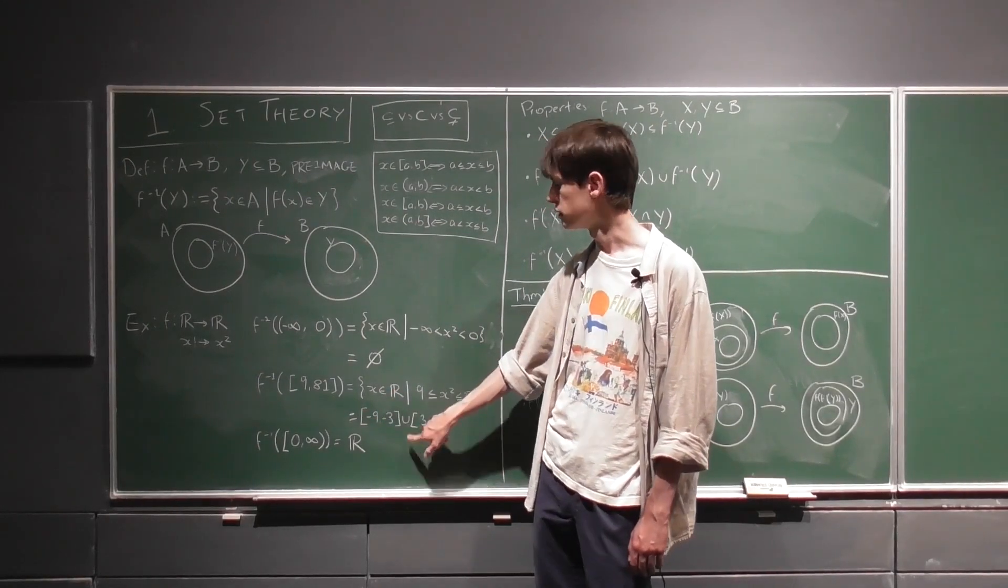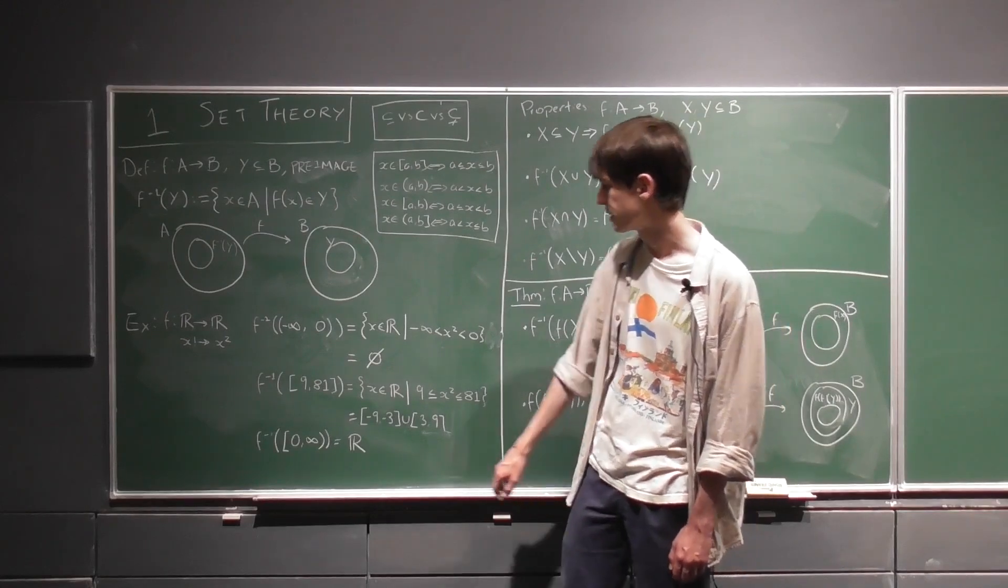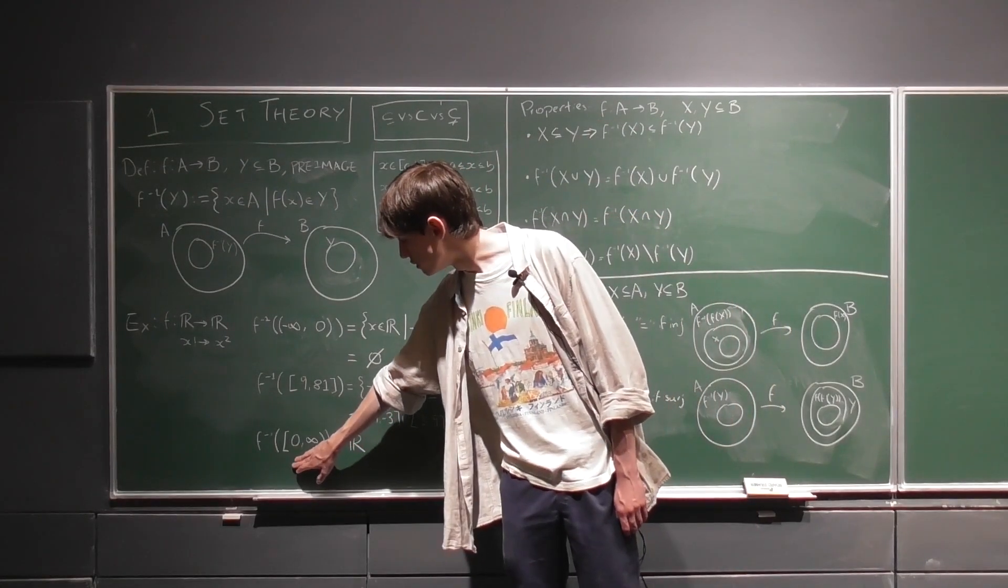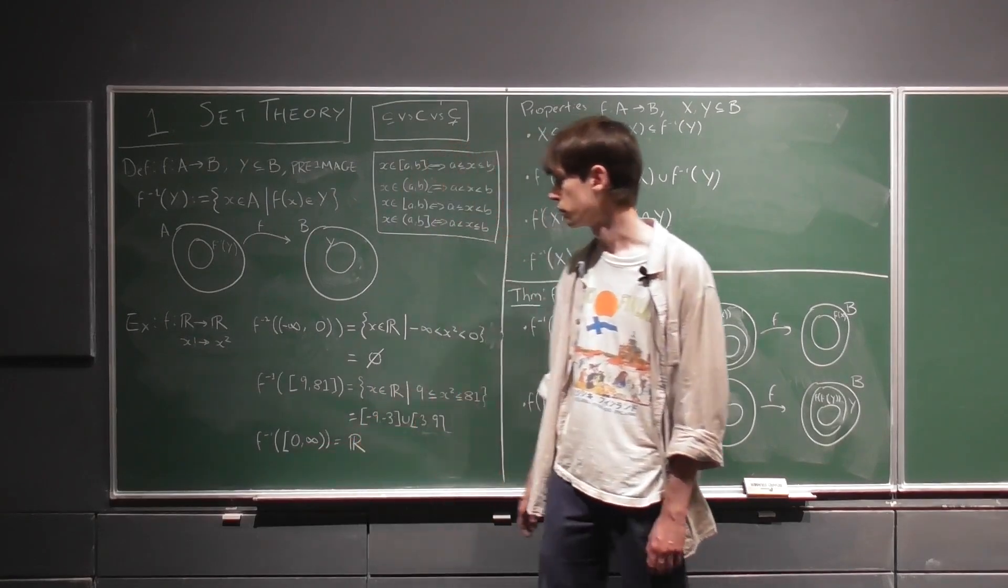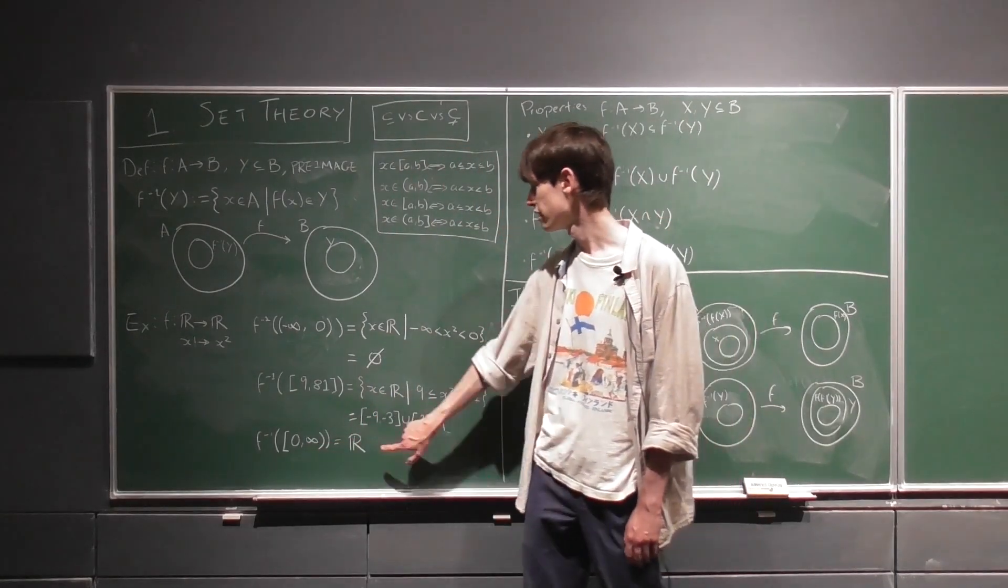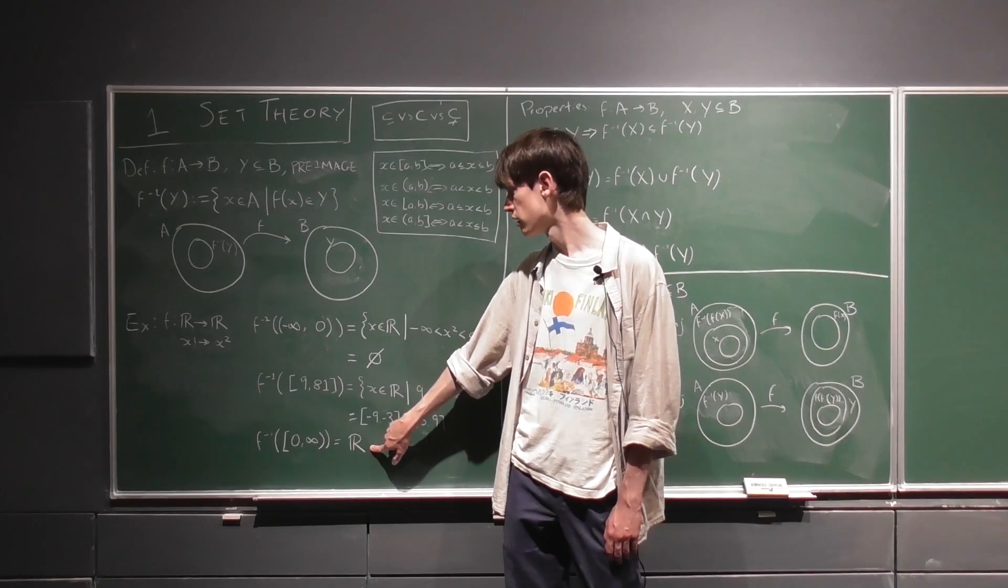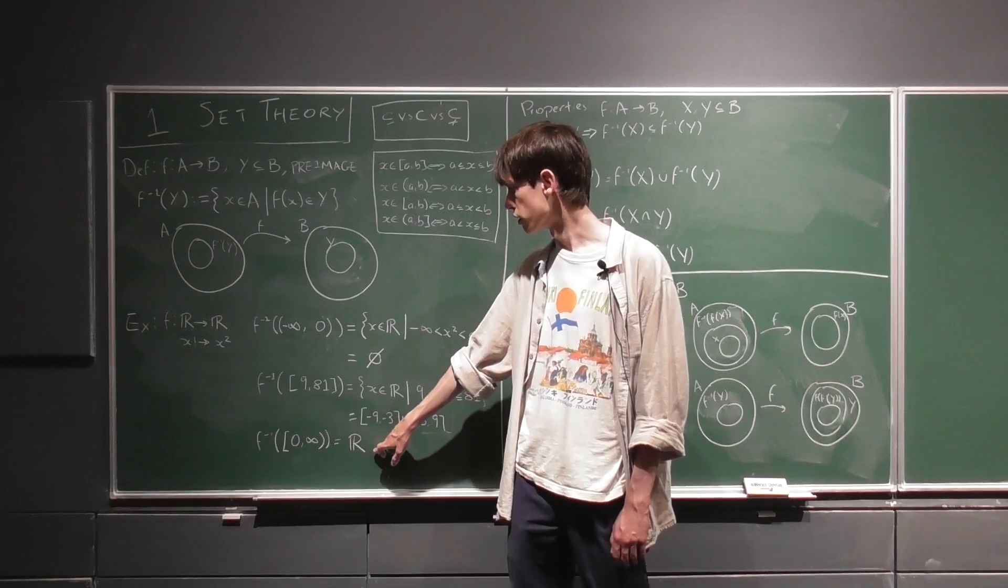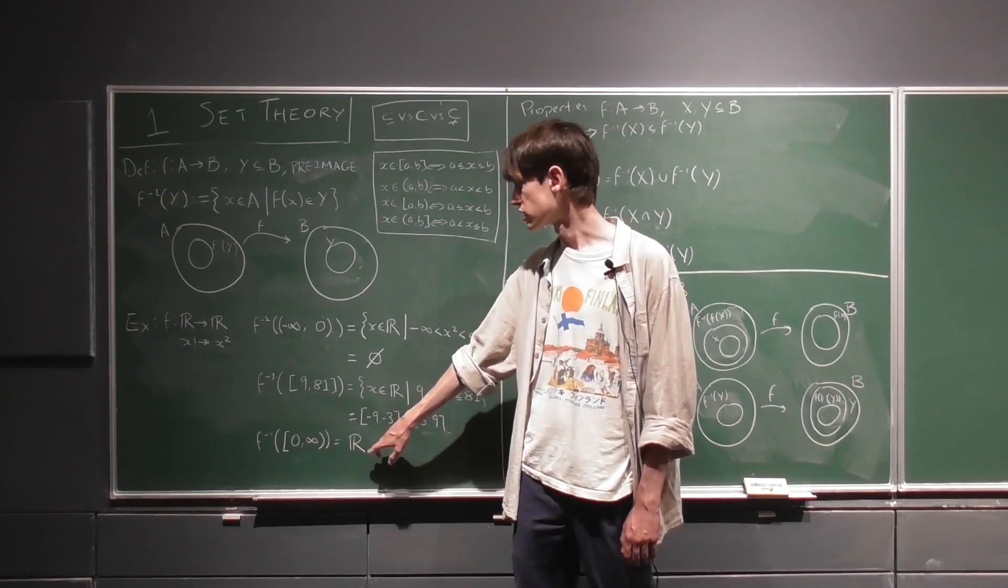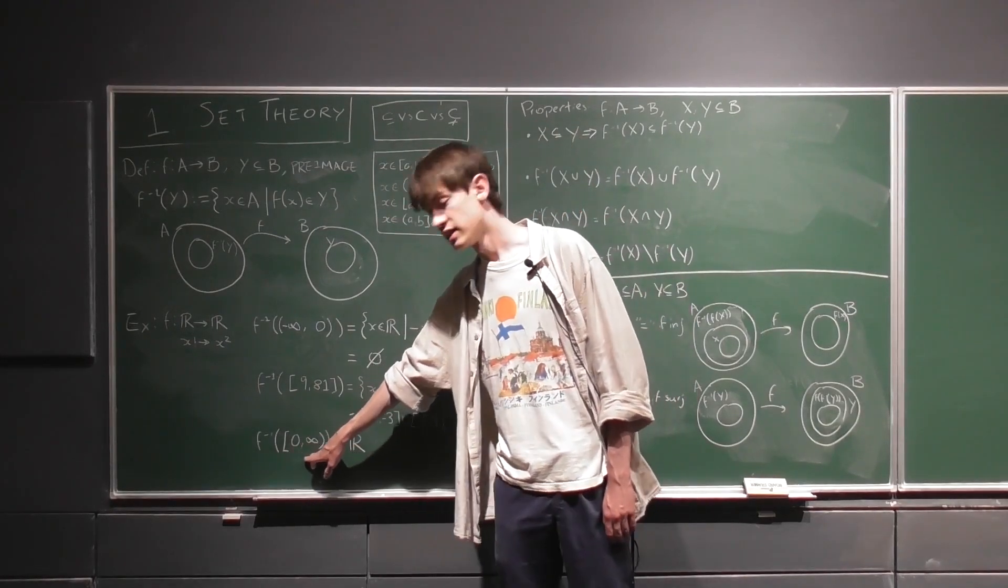And we have the union to join them. And then here, if we just took the entire set of the non-negative numbers, its pre-image is actually the real numbers, which you can justify for yourself. Any real number squared is going to give something which lies in here.